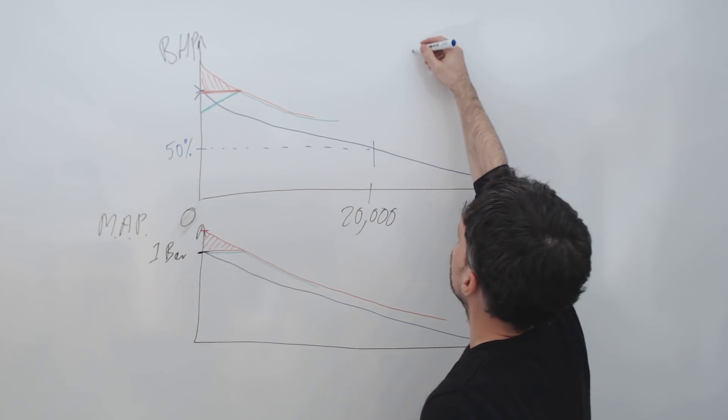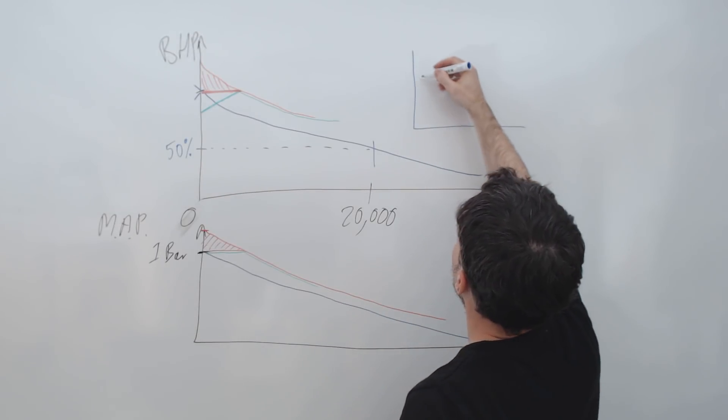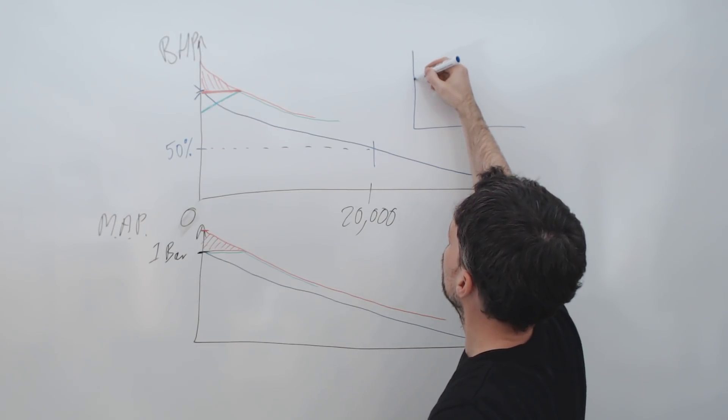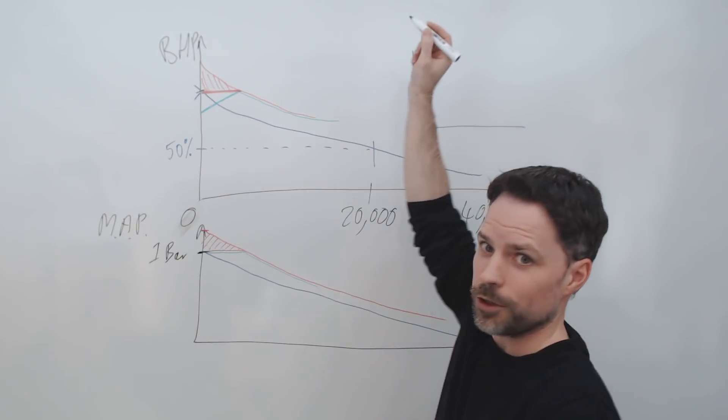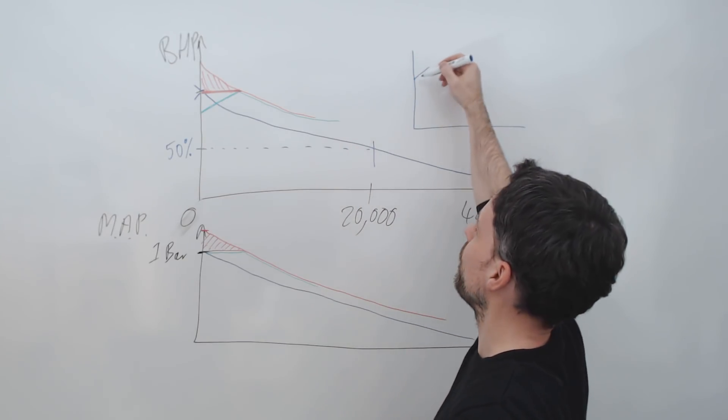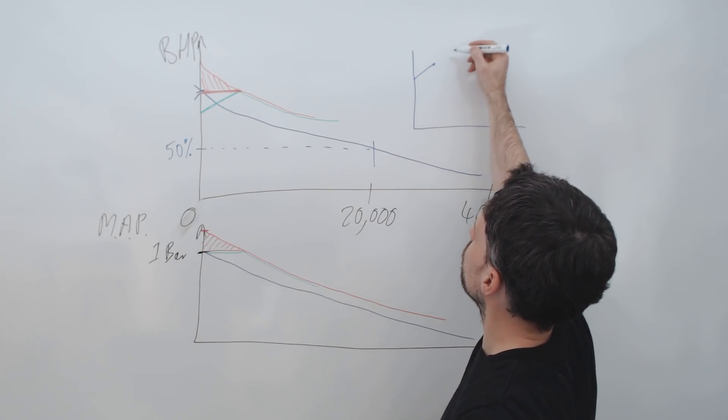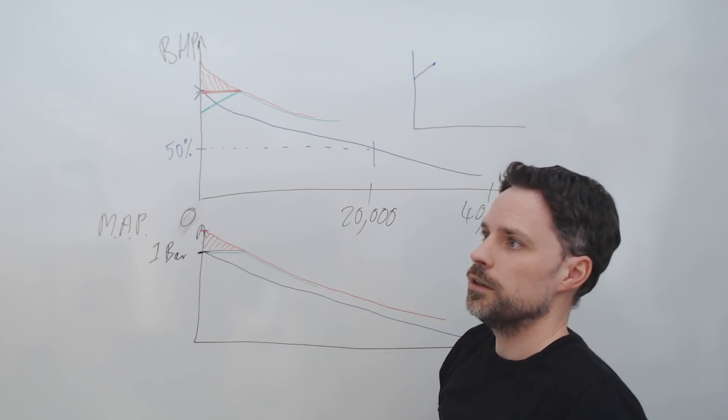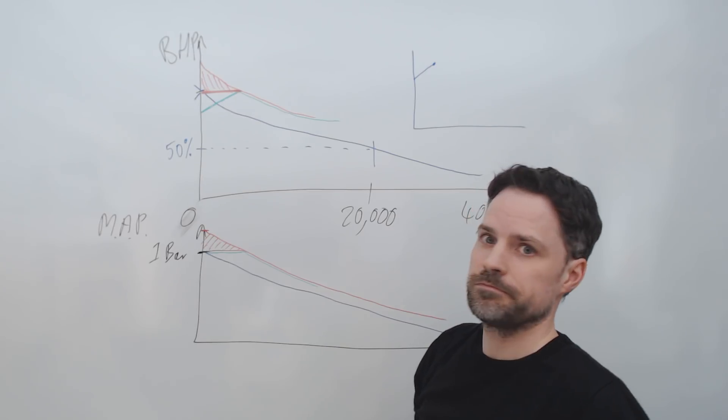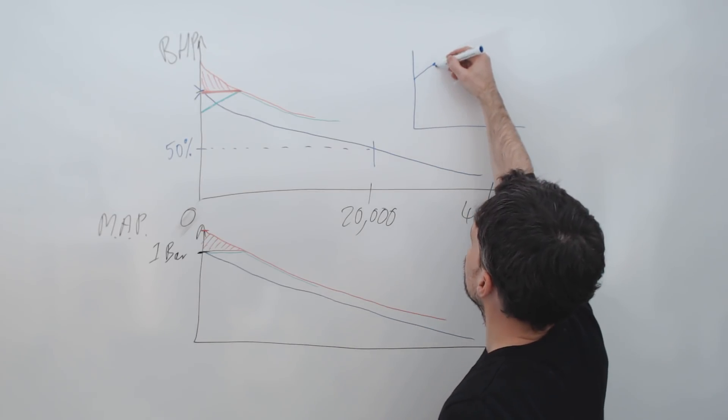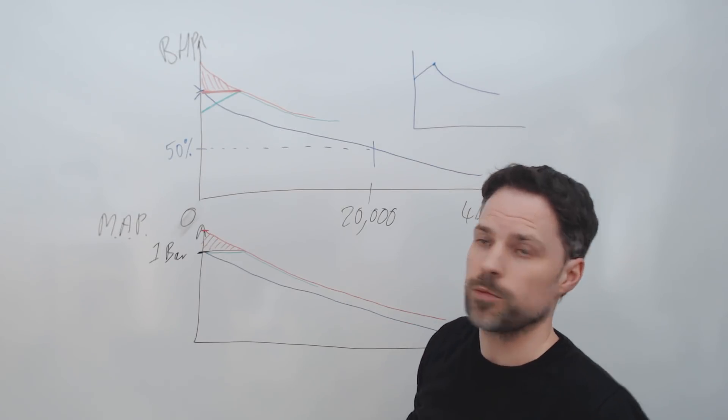So what this means is if we've got a Rolls Royce Merlin, the power at takeoff is going to be here. It looks like the power is increasing, but it's not. Actually the power should be here. This is pumping loss here. And then once we get up to rated altitude, which is going to be something like 18,000 feet something like that, then the power begins to drop off.